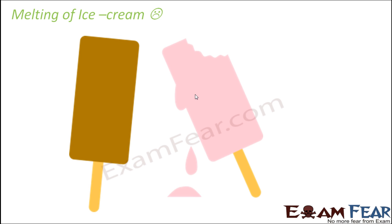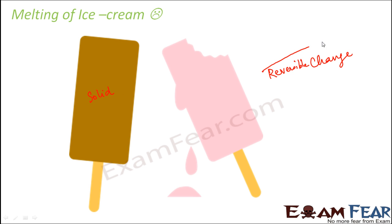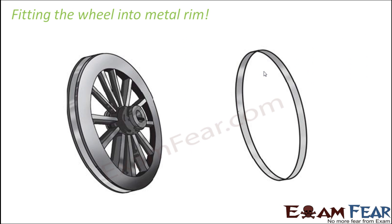If you take ice cream out of the refrigerator and keep it at normal room temperature or under the Sun, it starts to melt. It was in solid form and then gets converted to liquid form. This is a reversible change — when exposed to high temperature it melts, but if you cool it again it gets back to its solid form.